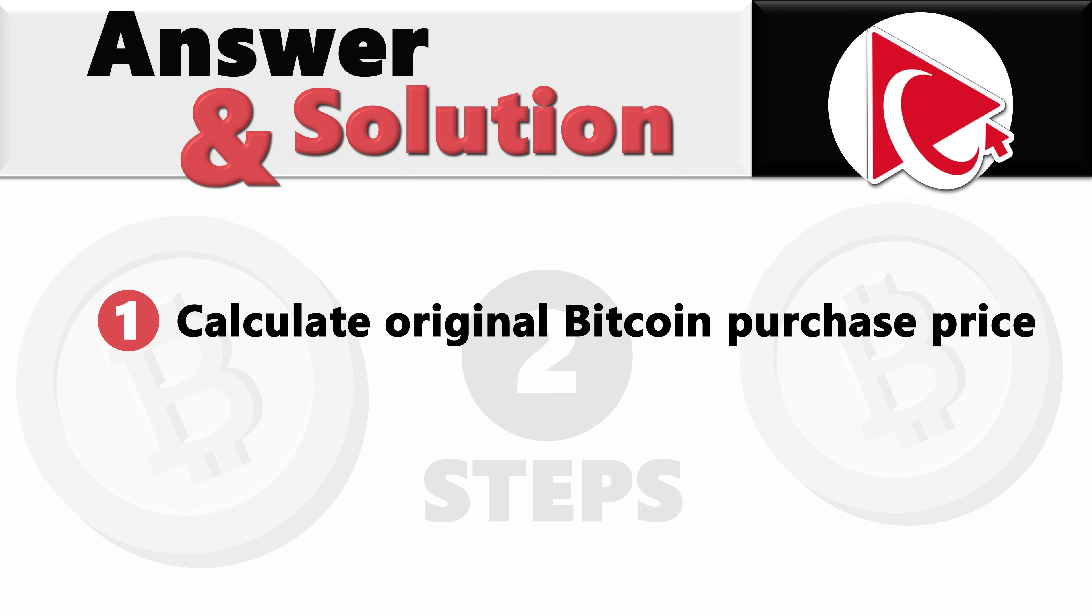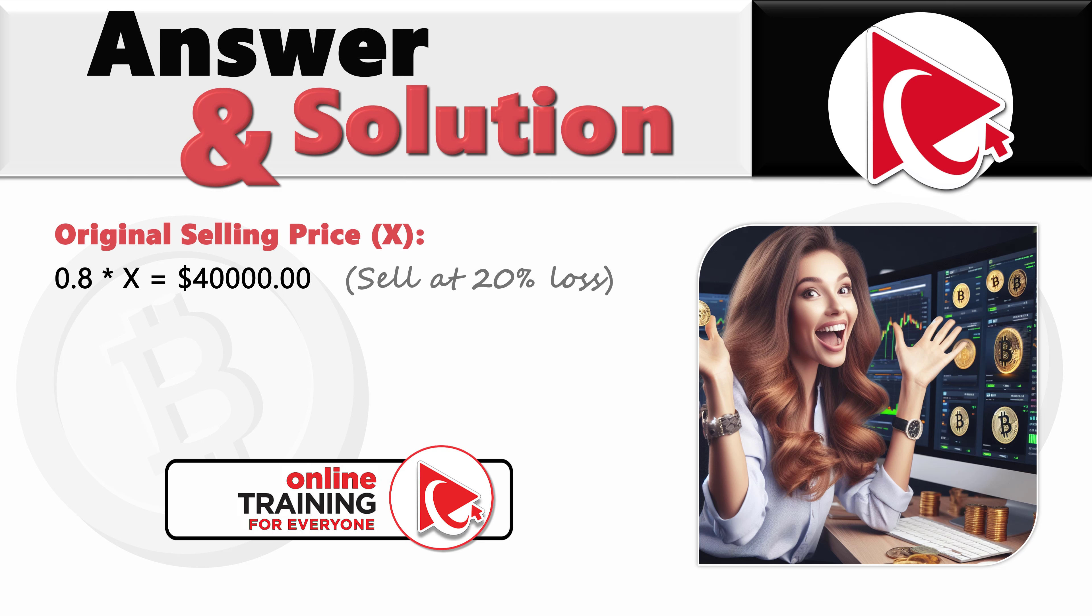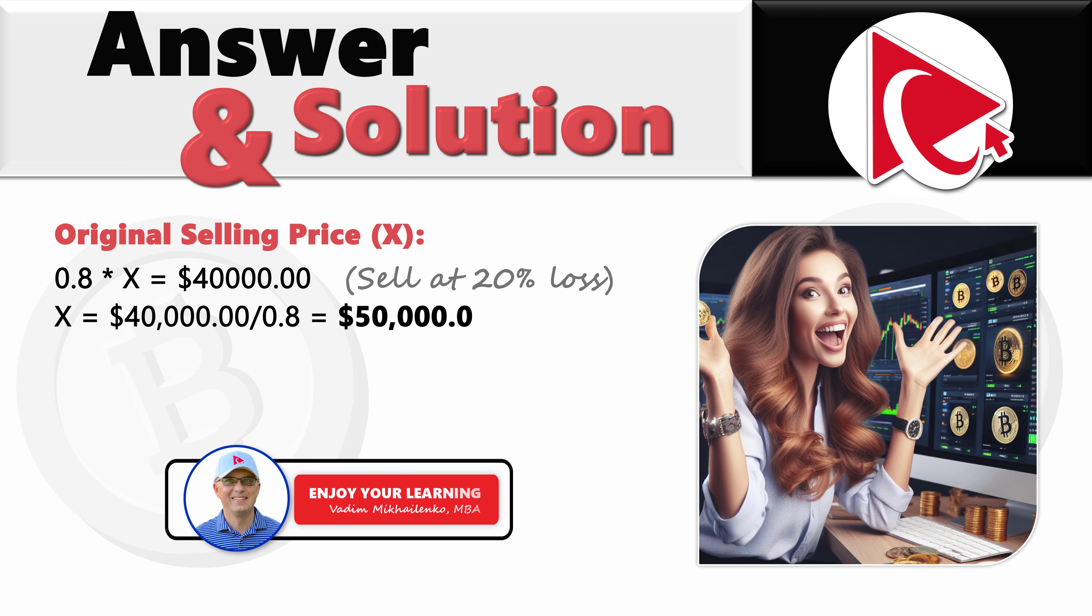In step one, we'll calculate original Bitcoin purchase price. And then in step two, we'll calculate the price with 20% profit. We'll define a variable X for original selling price. Based on this, we can build a formula. 0.8 multiplied by X equals $40,000. We can build this formula based on the fact that Altcoin Inc sold Bitcoin at 20% loss. X equals $40,000 divided by 0.8 and the end result of this is $50,000.